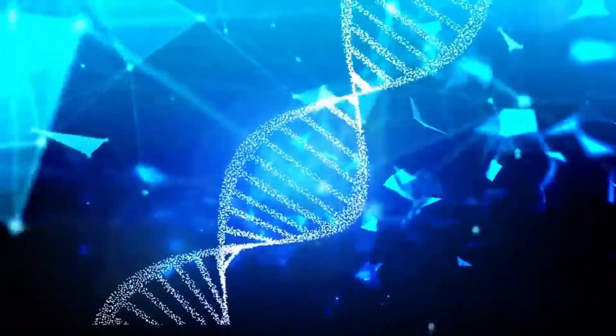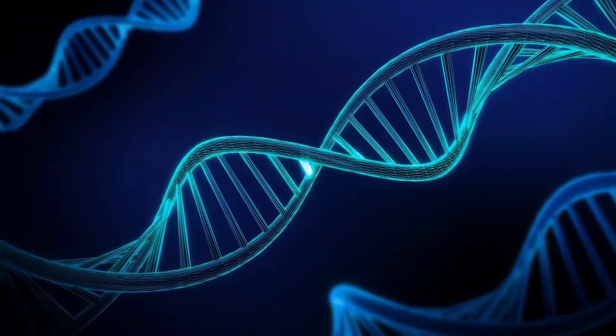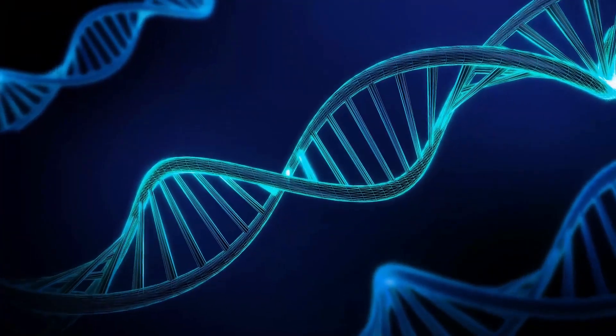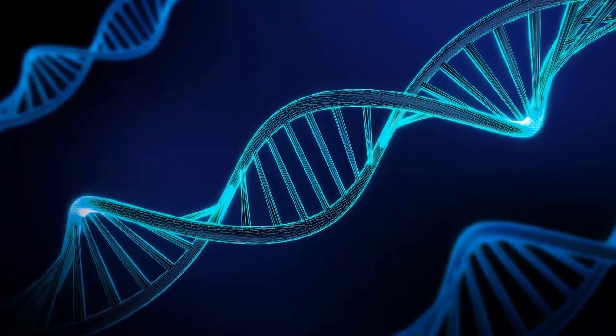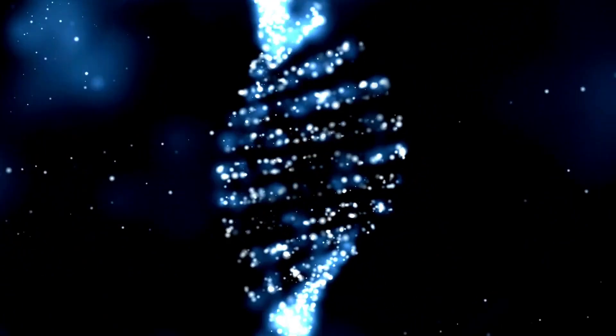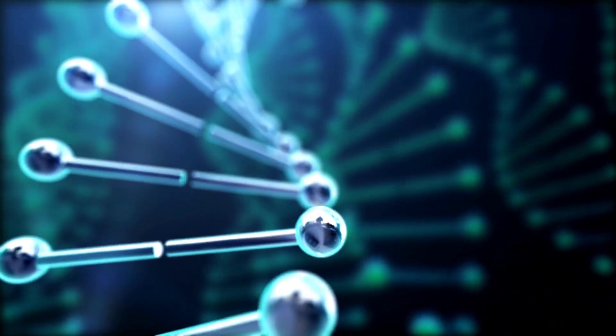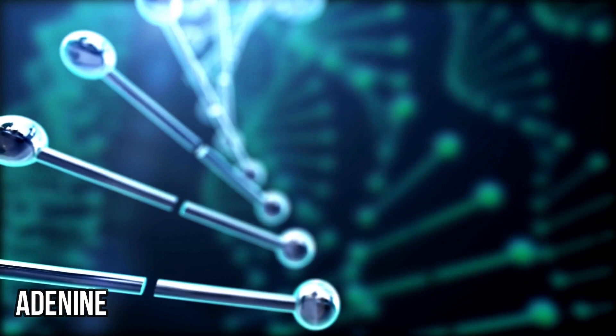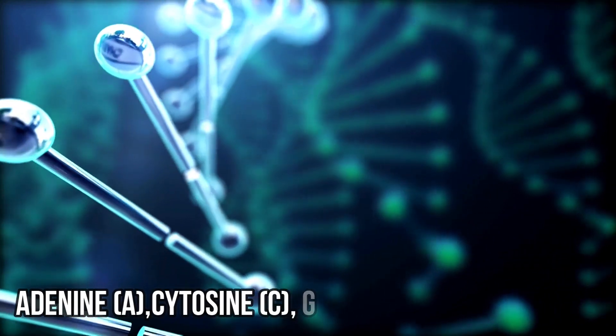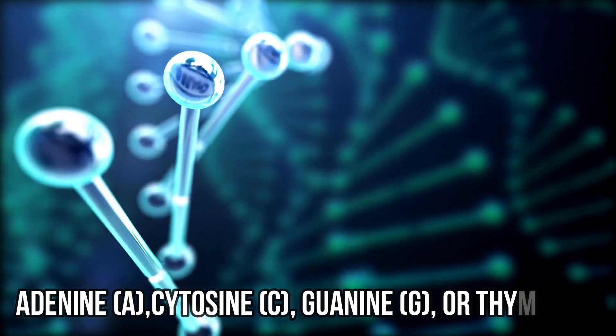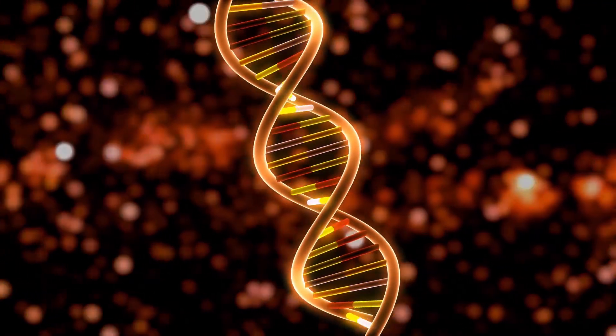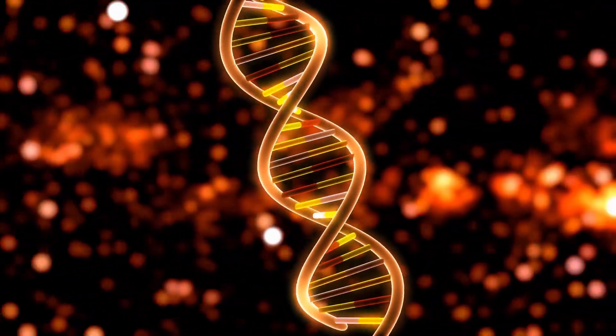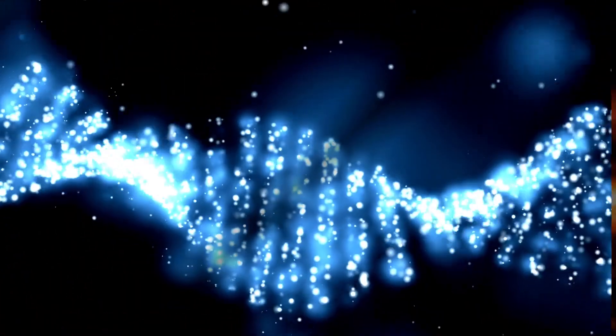The DNA molecule is a long, thin, ladder-like structure that is made up of two strands of nucleotides twisted together in a double helix. Each strand is composed of a sugar molecule called deoxyribose and a phosphate group and one of four bases: adenine, cytosine, guanine, or thymine. The DNA molecule is held together by chemical bonds between the nucleotides, and it's a very stable and resistant to damage molecule.